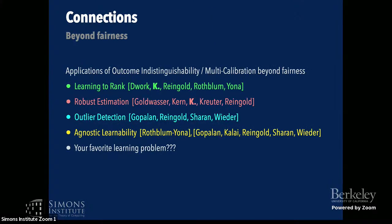To conclude, the ideas of outcome indistinguishability and multi-calibration have seen applications beyond fairness. We have works applying them to learning to rank and robust estimation, and others have done work related to outlier detection and agnostic learnability. The main contribution of the OI framework so far is establishing the framework itself, and hopefully it can be applied to your favorite learning problem too. Thank you — happy to take questions.